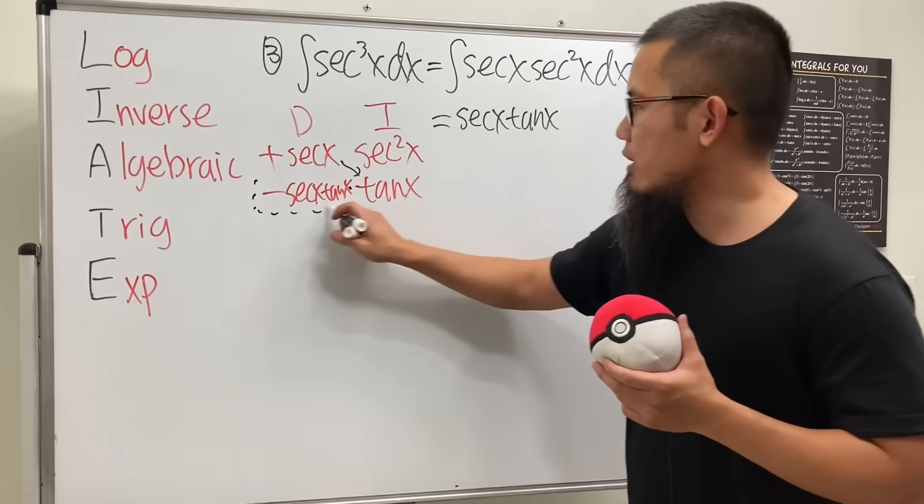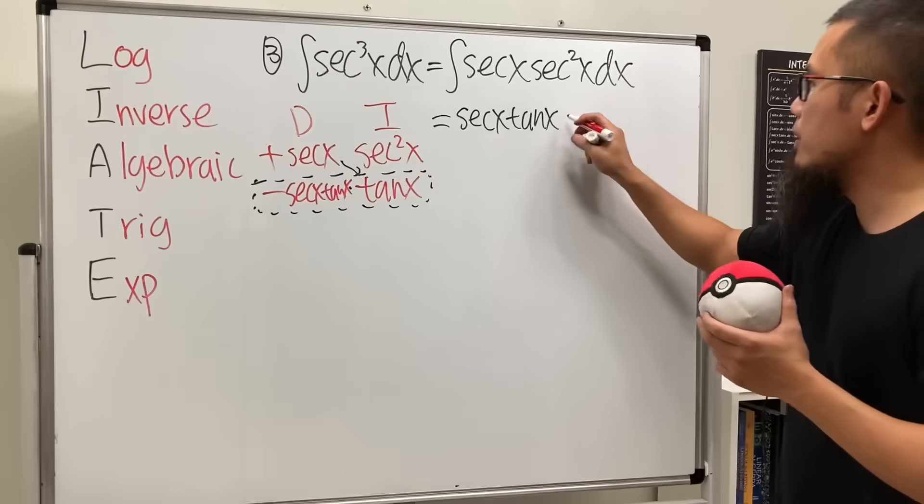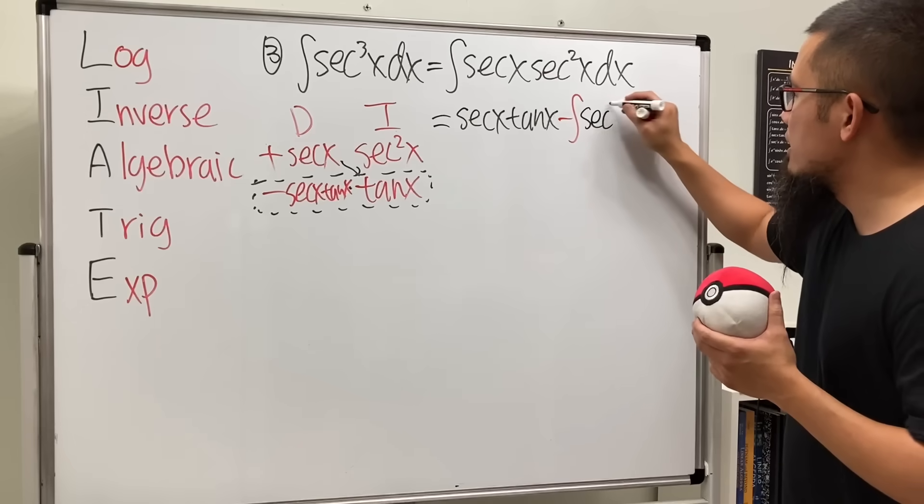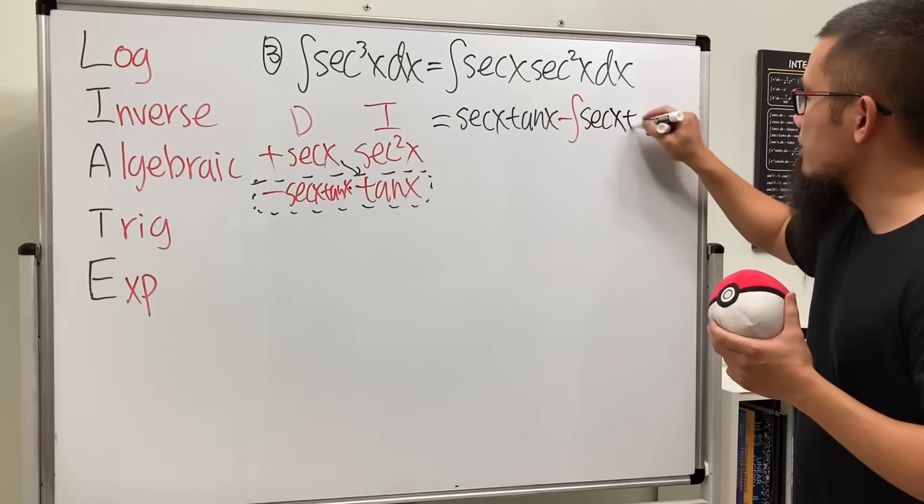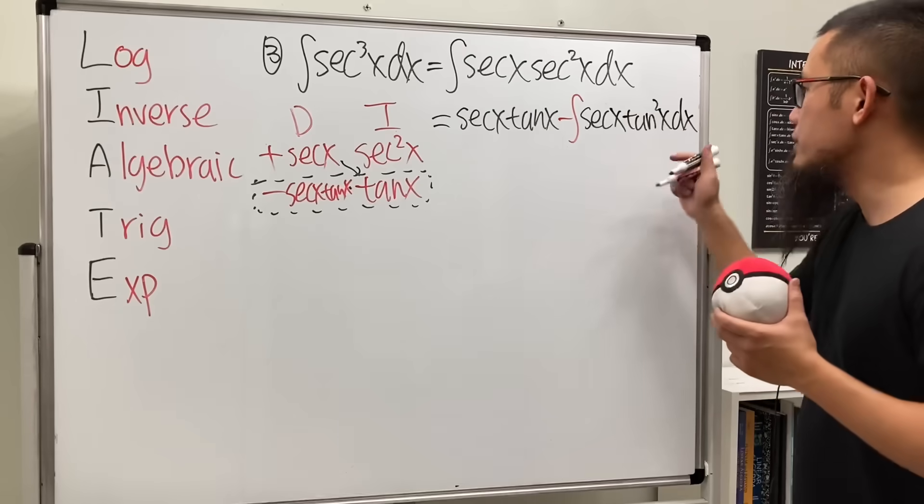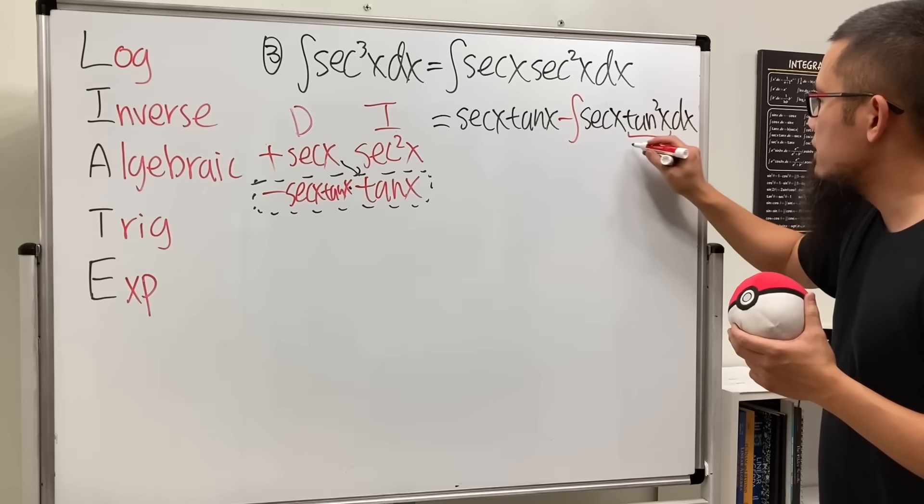Next, we multiply these two things together and then put that inside of an integral. It's a minus integral and we have secant and tangent to the second power.